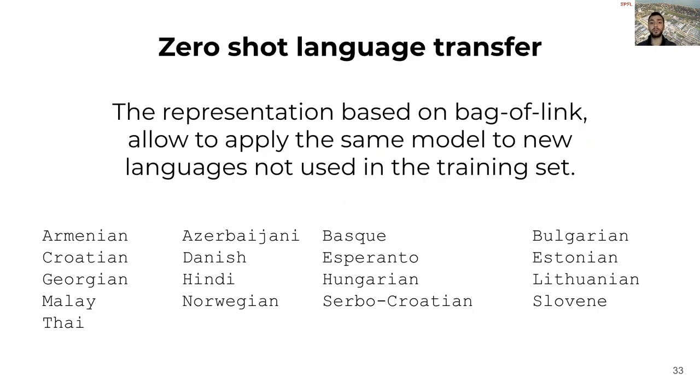Finally, a very important aspect of WikiPDA is that the representation based on bag of links allows us to apply the same model to new languages not used in the training set. This makes WikiPDA able to do zero-shot language transfer. In the paper, we demonstrate how the previous applications can be applied successfully to 17 new languages that were not included in the training set.